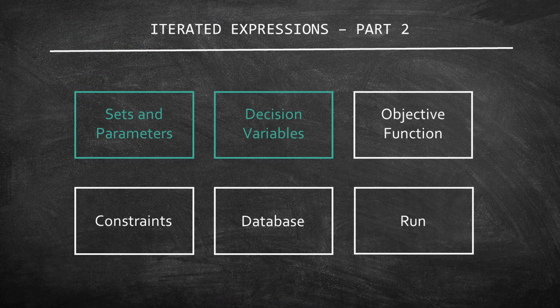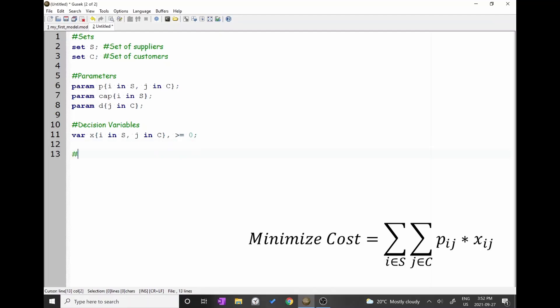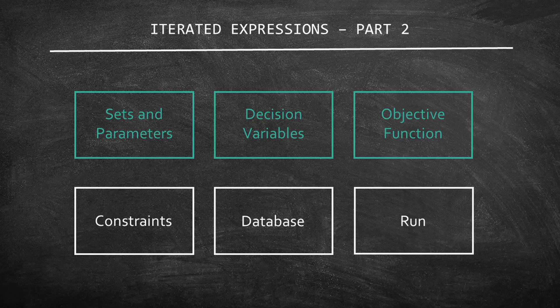Now let's declare the objective function. Since this is a minimization problem, type minimize. Let's name the objective function as cost and add a colon. Do you remember that the objective function has a double sum? The first one is i in s and the second one is j in c. So type sum keys i in s, comma j in c, close keys, then write p brackets i j, star x brackets i j. Finish the statement with a semicolon.